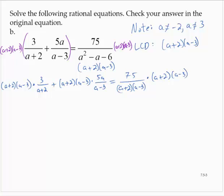So now, nice things should happen here. First term on the left, a plus 2s reduce, leaving 3 times a minus 3. Applying the distributive property, that's 3a minus 9. Plus, in the second term, the a minus 3s reduce. Applying the distributive property, I would have 5a squared plus 10a.